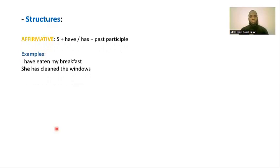Now we are going to talk about structures — sentence structures — which means how to give an affirmative sentence, a negative, and an interrogative sentence in the present perfect tense. Let's start with the affirmative. For the affirmative, we have: subject + have or has (according to the subject) + the past participle of a main verb.